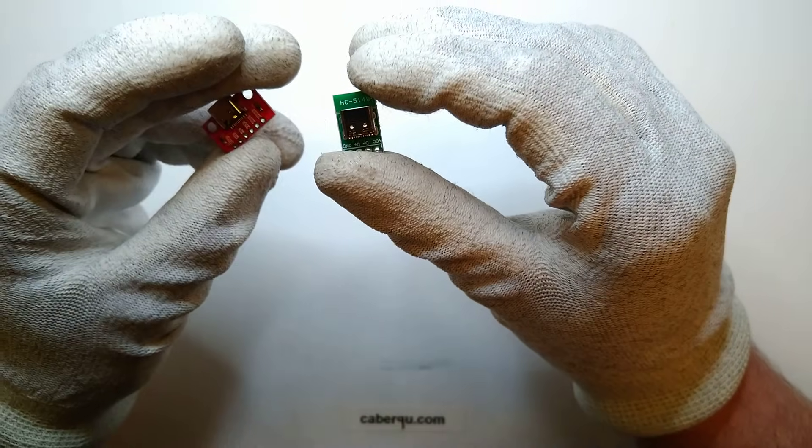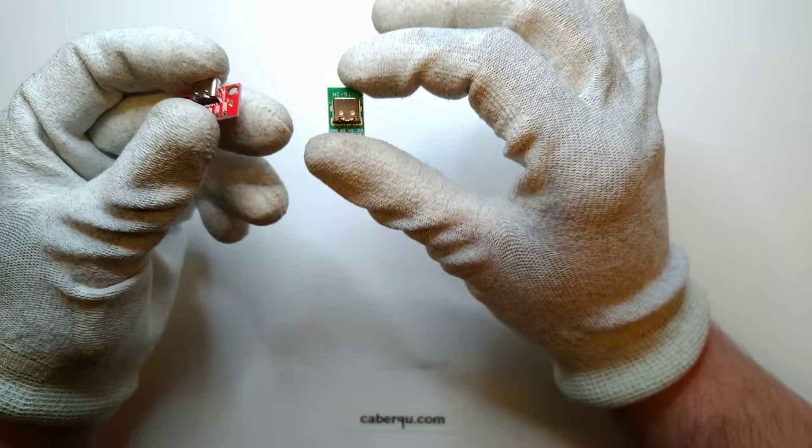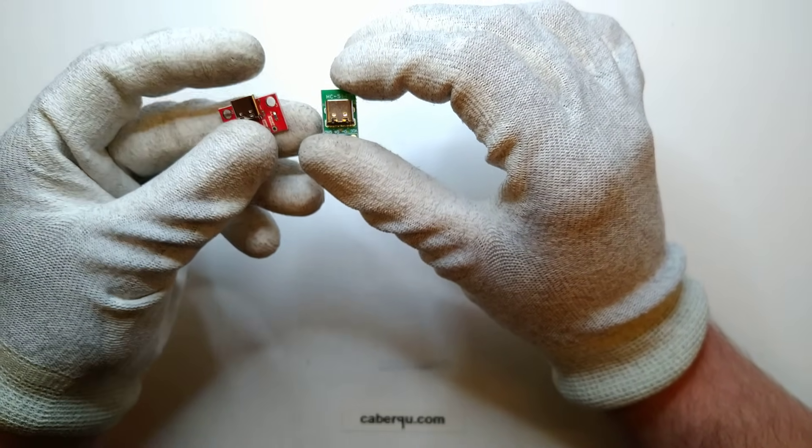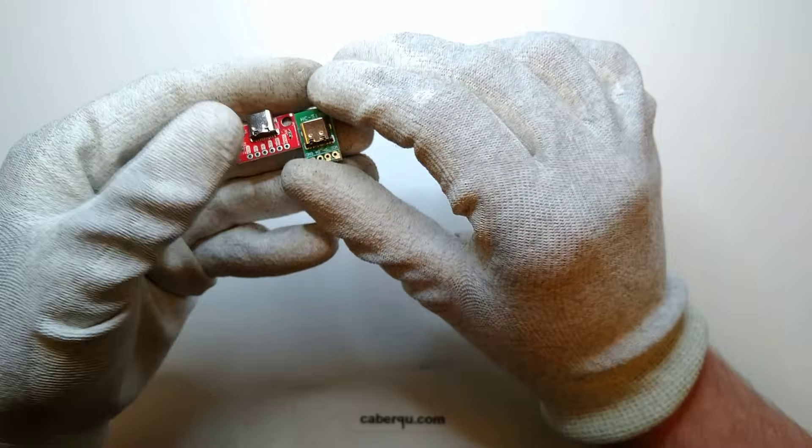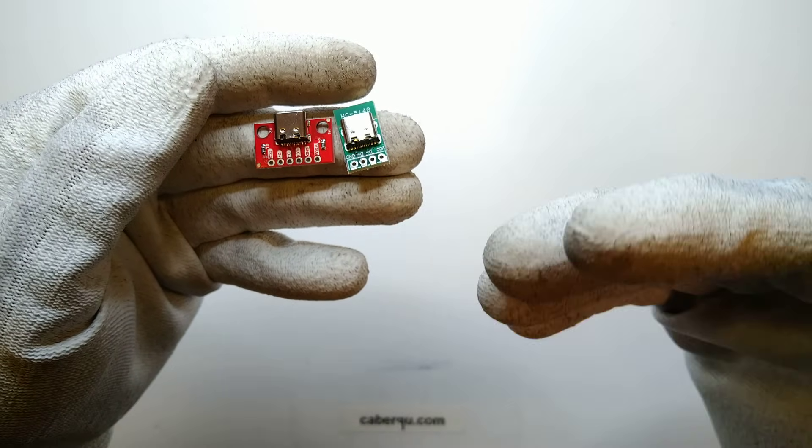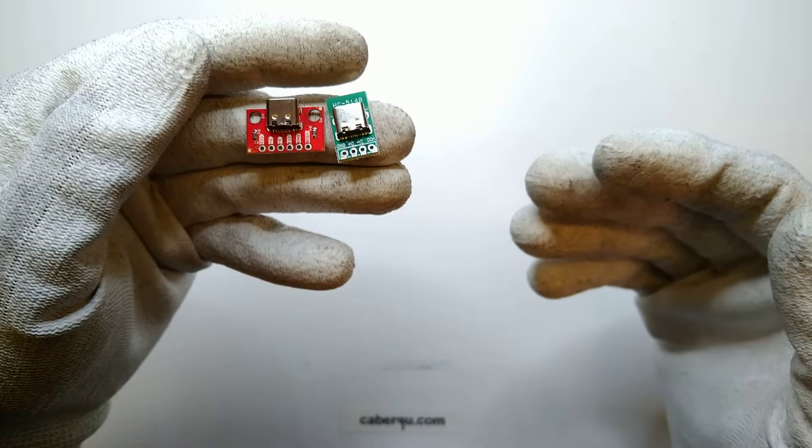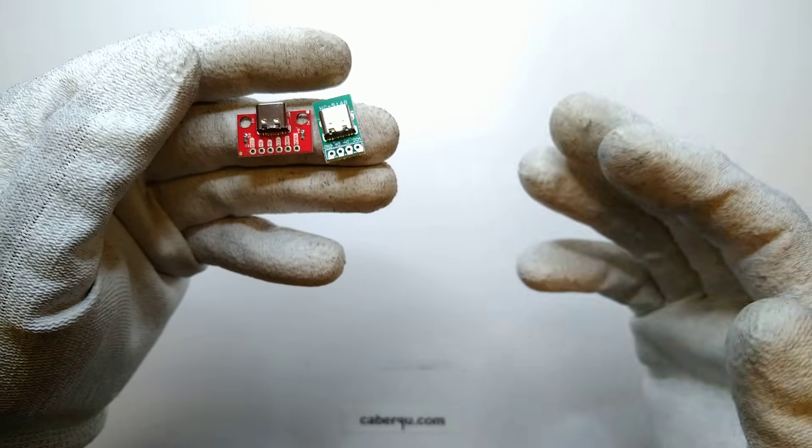So there is a reason why this breakout board has the six pins and this one only has four, and this one, the red one, is actually working and the green one is not. So those CC pins, like I said, are responsible for power negotiation, so a device that wants to receive power needs to have pulled down resistors.